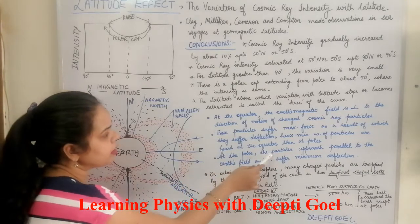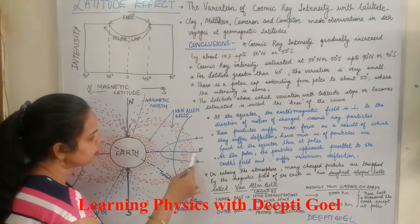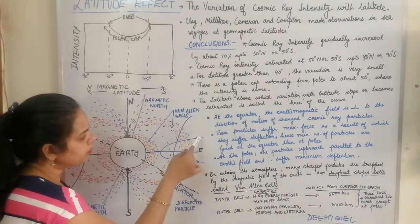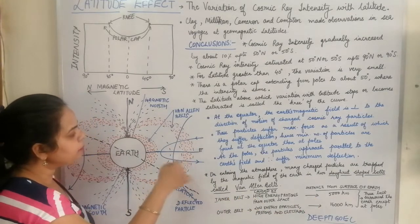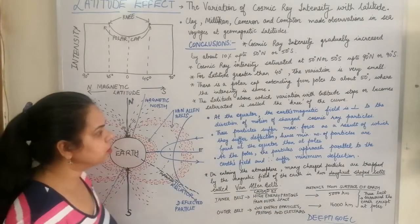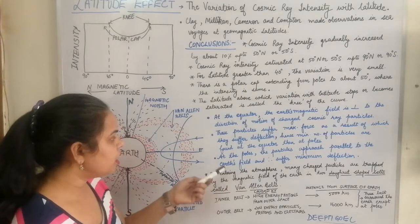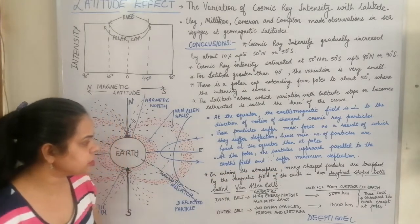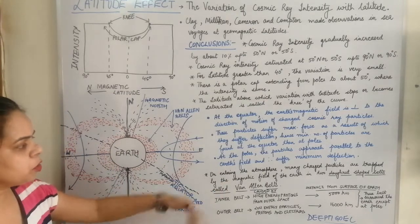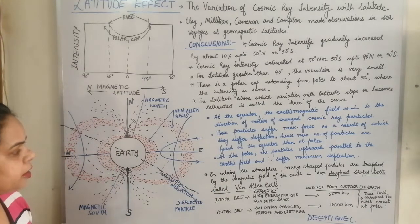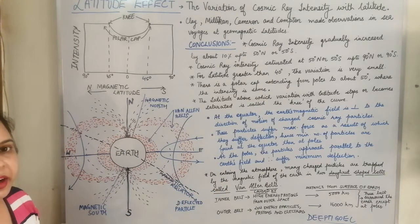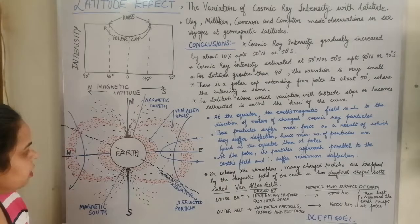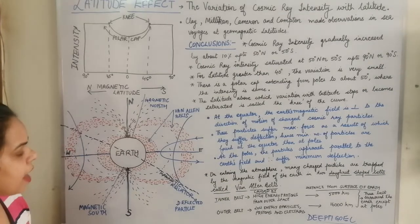At the poles, the particles approach parallel and suffer minimum deflection. On entering the atmosphere, charged particles are trapped by the magnetic field of the earth in two donut-shaped belts called the Van Allen belts.